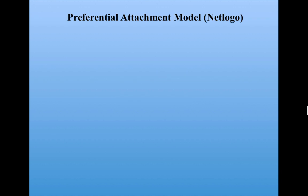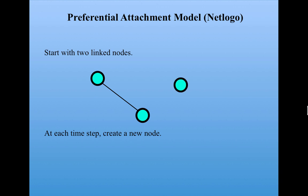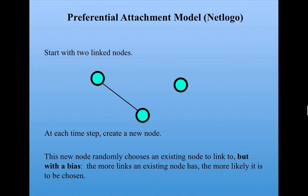And here's how that model works. We start with two linked nodes. At each time step, we create a new node. The new node is going to randomly choose one of the existing nodes to link to. But it has a bias. The more links the existing node has, the more likely it is to be chosen.